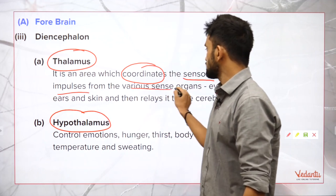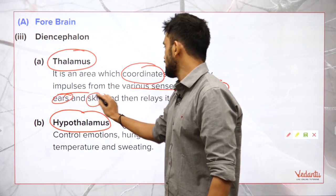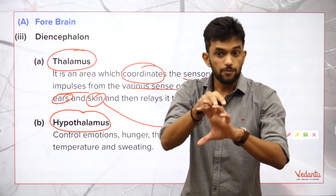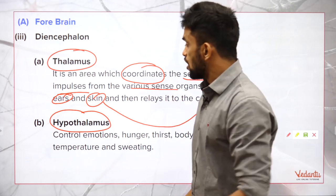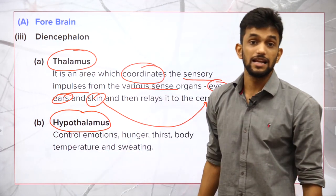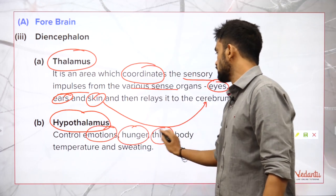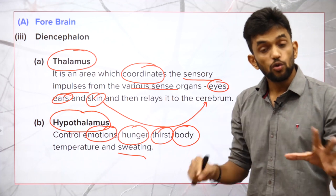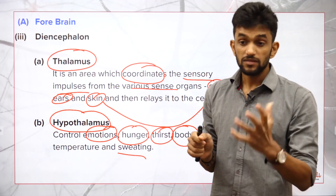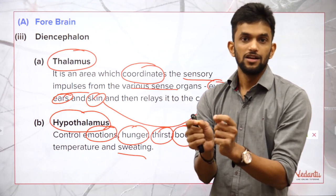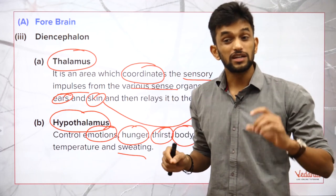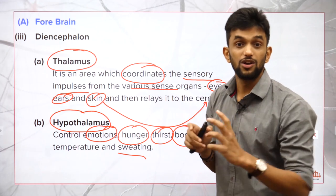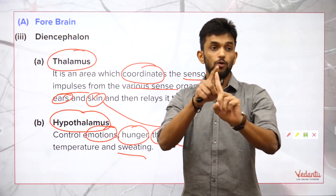The thalamus coordinates sensory impulses from various sense organs — eyes, ears, and skin — and relays them to the cerebrum, specifically to its sensory area. The hypothalamus controls emotions, hunger, thirst, body temperature, and sweating. In experiments, when the hypothalamus of a rat was damaged, it ate uncontrollably until it died — showing how hypothalamus controls hunger and emotions.